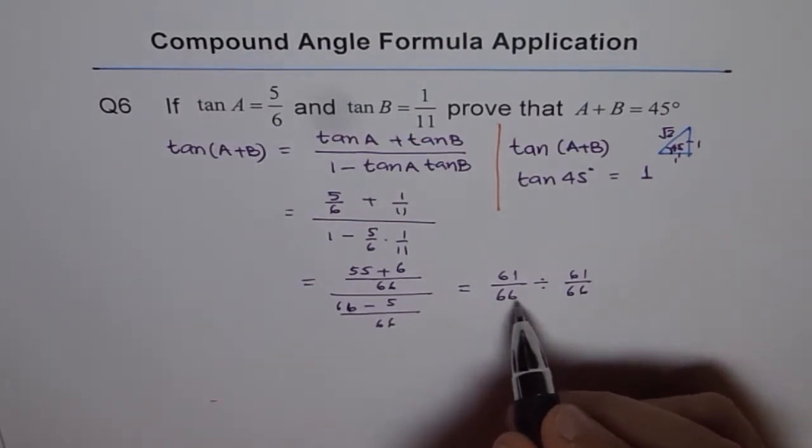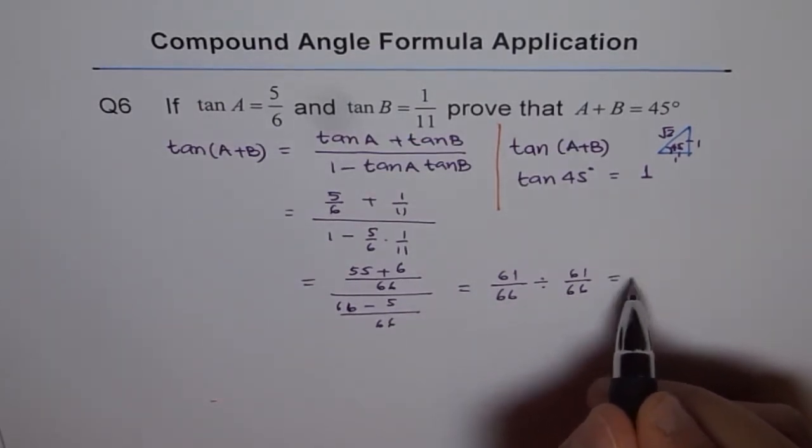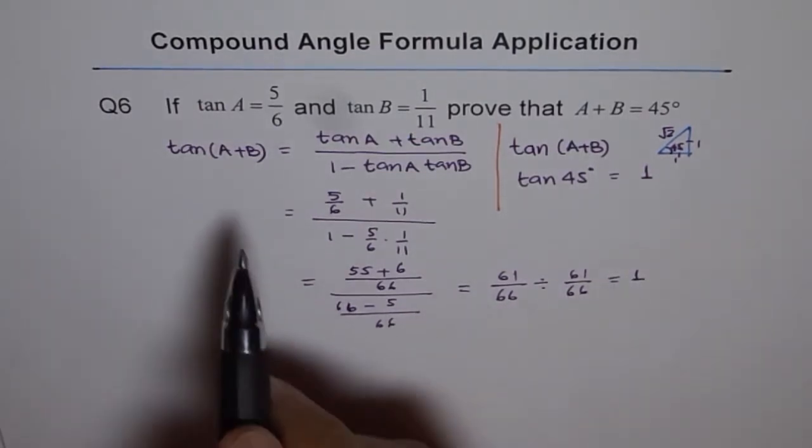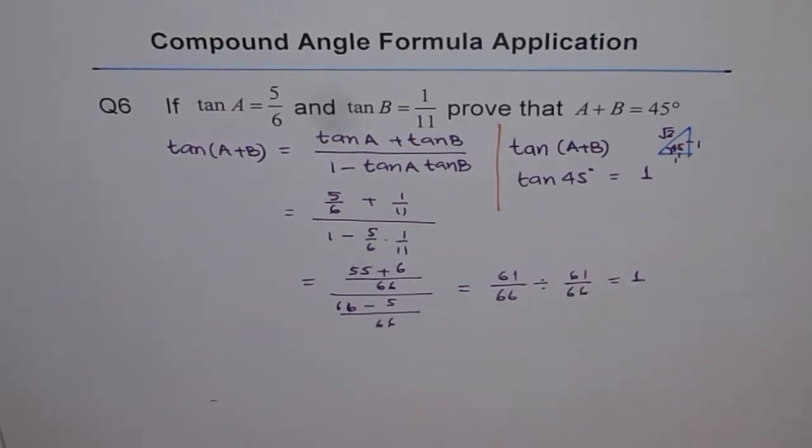Well, 61 over 66 divided by 61 over 66 is equal to 1. So what we get is tan A plus B is equal to 1.